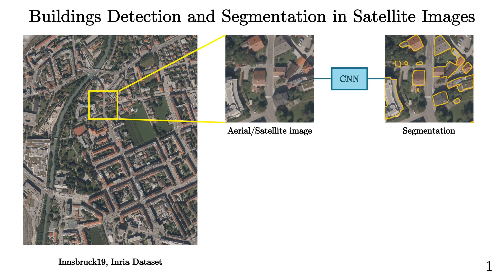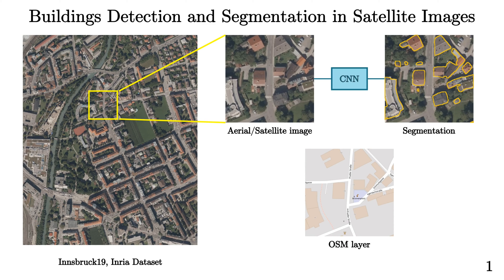As a result, the produced boundaries have irregular shapes, which are far different from cartographic building footprints that are present, for example, in OpenStreetMap, and characterized by sharp corners and straight edges.